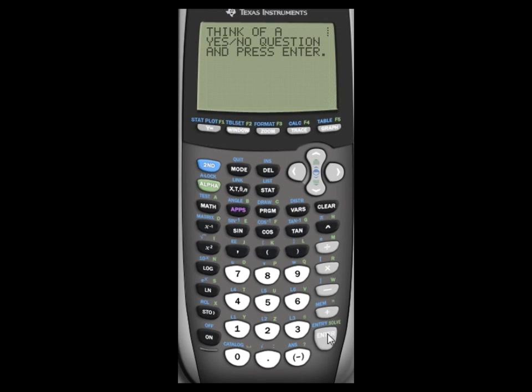Think of a yes or no question, and press enter. So I'm just going to say, is this video going to hit 10 likes? And then I press enter, maybe. So that means I chose zero out of the three numbers I was going to choose. Now it's not going to give you maybe all the time.